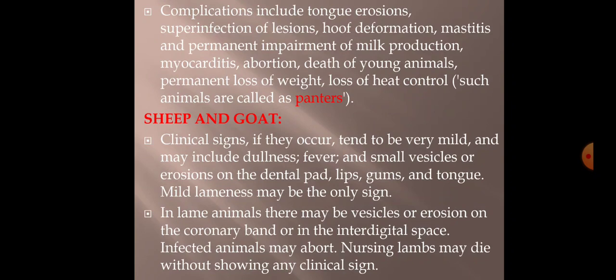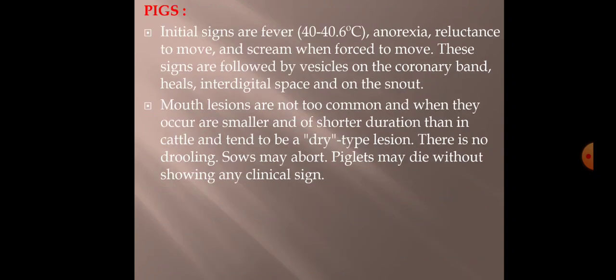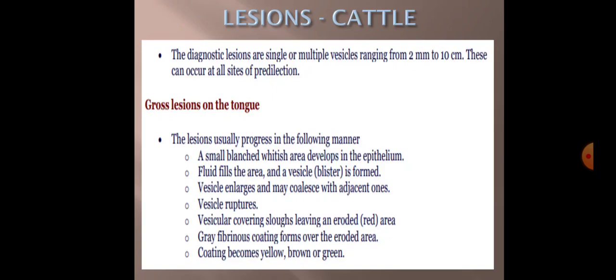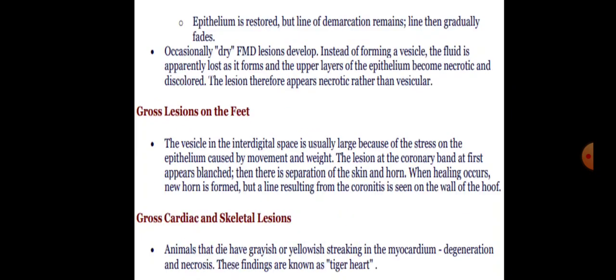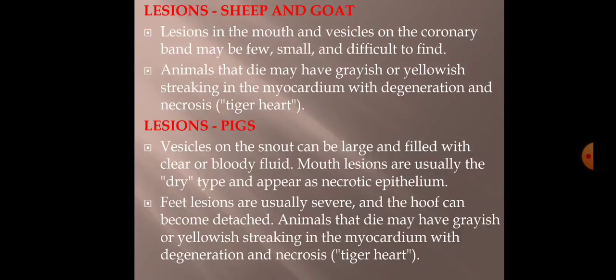In sheep and goats, signs and symptoms are almost the same but very mild; mild lameness can be an important sign. In pigs, lesions tend to be dry type and smaller in size. Vesicles or blisters are present on the tongue, feet, and cardiac and skeletal muscle. Tiger heart appearance is an important peculiar lesion seen mostly in young animals dying of FMD virus — they die mostly because of severe myocarditis.